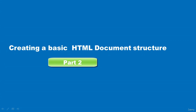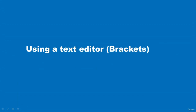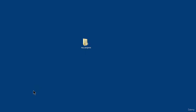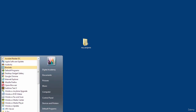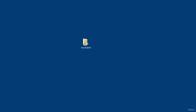Hello and welcome to part two of creating a basic HTML document structure. We are going to use a text editor — the one I'll be using is called Brackets. I recommend you use Brackets so it's easier to follow along. However, if you have a preferred text editor, please feel free to use that. To open the Brackets text editor, locate the icon — if you're on a Mac, go to Applications; on Windows, go to All Programs and find the Brackets icon, then click to launch.